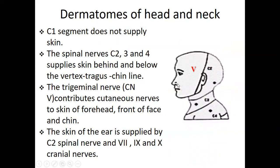For the dermatome of the head: C1 segment does not supply the skin - please remember that. The spinal nerves C2, C3, and C4 supply the skin behind and below the vertex-tragus-chin line. The trigeminal nerve, the fifth cranial nerve, contributes cutaneous innervation to the skin of the forehead, front of the face, and chin. The skin of the ear is supplied by the C2 spinal nerve, and also by cranial nerves 7, 9, and 10.